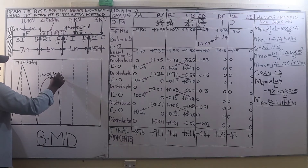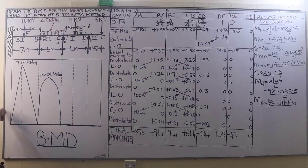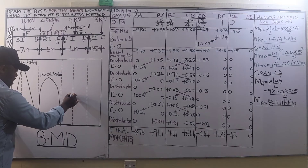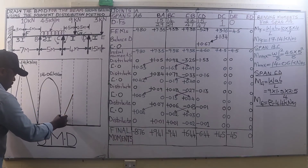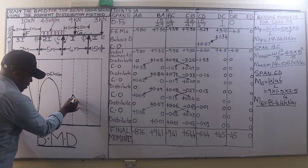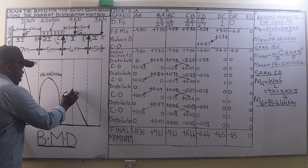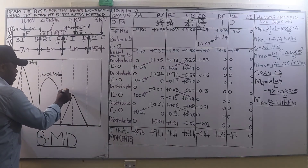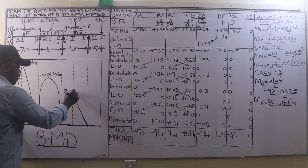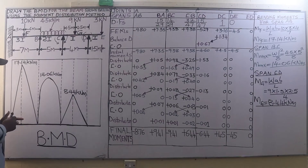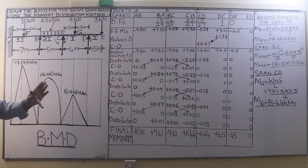For span C to D we have 8.44 kilo-newton-metres, plotted approximately there.